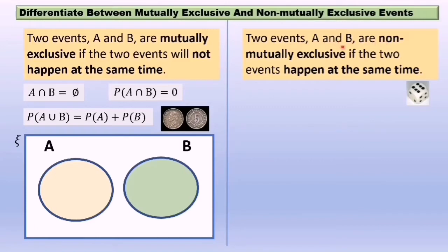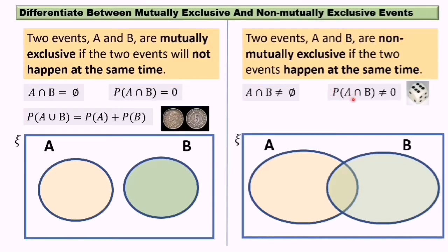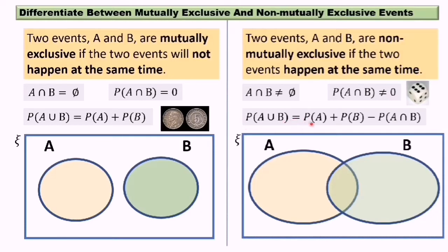Two events A and B are non-mutually exclusive if the two events can happen at the same time. For example, rolling a dice — the event of getting an odd number and the event of getting a prime number can happen at the same time. Set A intersect Set B does not equal the empty set. Probability of event A union event B equals probability of event A plus probability of event B minus probability of event A intersect event B.